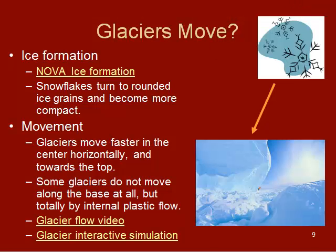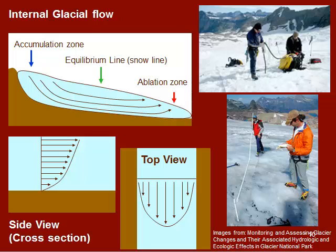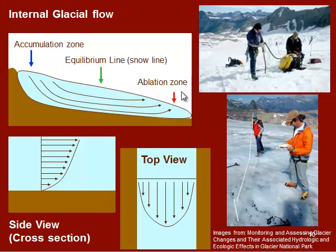To show what happens inside a glacier: snow and ice accumulate up in the higher points in the accumulation zone, where fluffy snow turns into solid ice. The ice flows down by the pull of gravity, then flows inside the glacier down towards the ablation zone. The equilibrium line is where accumulation and ablation are equal. The ablation zone is where melting occurs, or loss in ice volume.